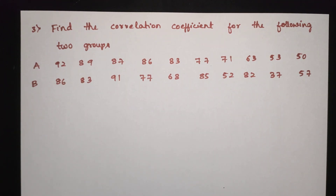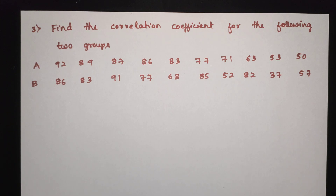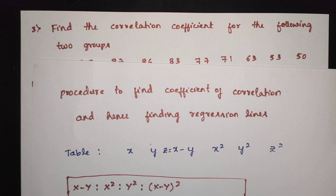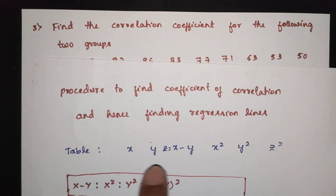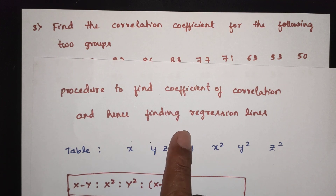Find the correlation coefficient. The coefficient of correlation is R. For the following data, X and Y, 1 to 13. This is the procedure to find the coefficient of correlation and hence finding the regression line.